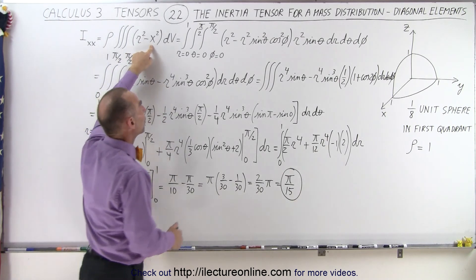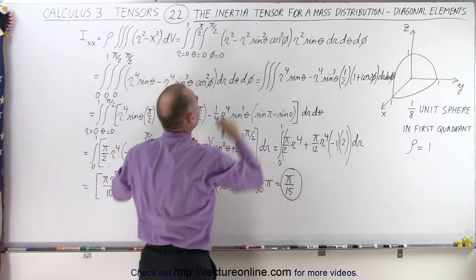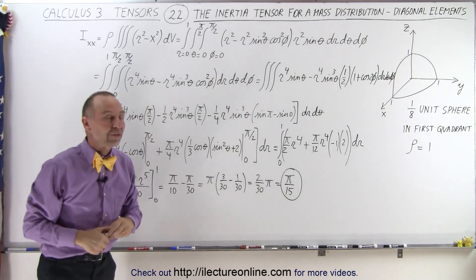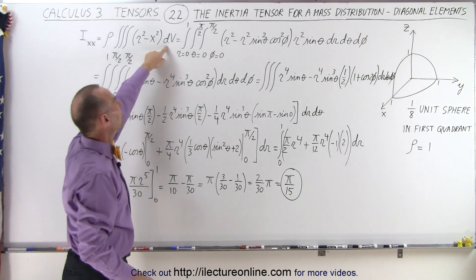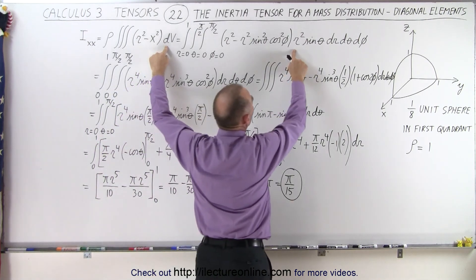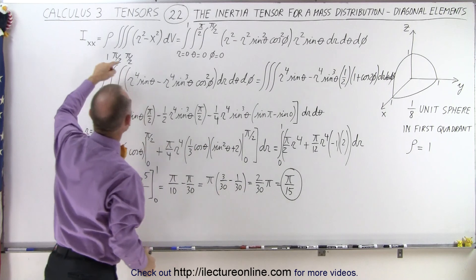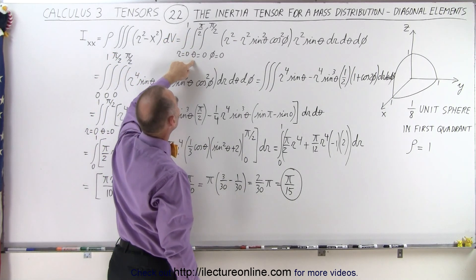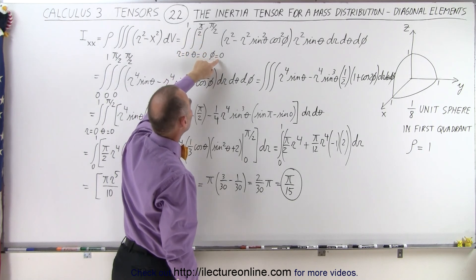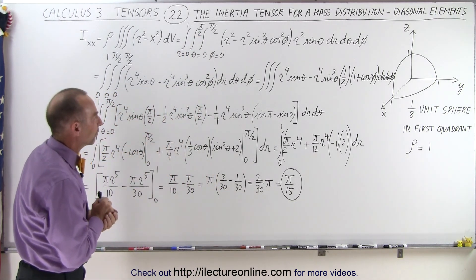x can be written as r sine theta cosine phi, and since it's squared, that becomes r-square sine-square theta times the cosine-square of phi. The volume element dv is indeed r-square sine of theta dr d-theta d-phi, and the limits of integration are going to be for r 0 to 1, for theta 0 to pi over 2, and for phi 0 to pi over 2. That will give us the one-eighth of a volume of a sphere.